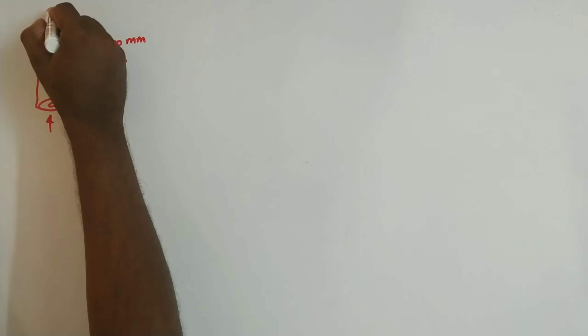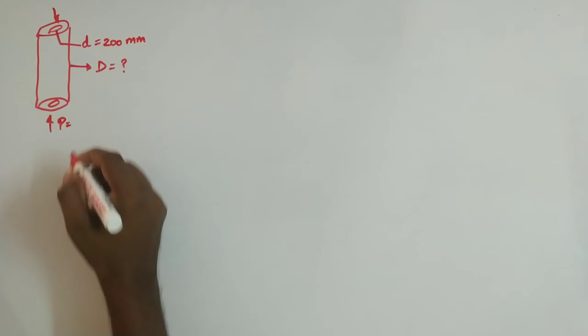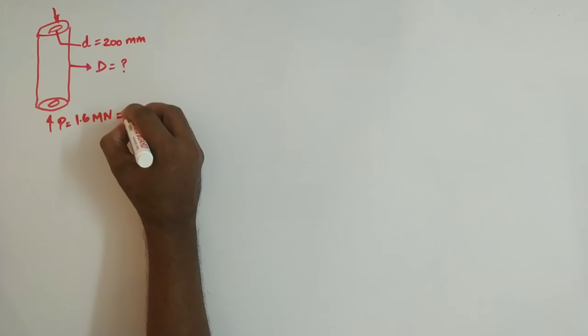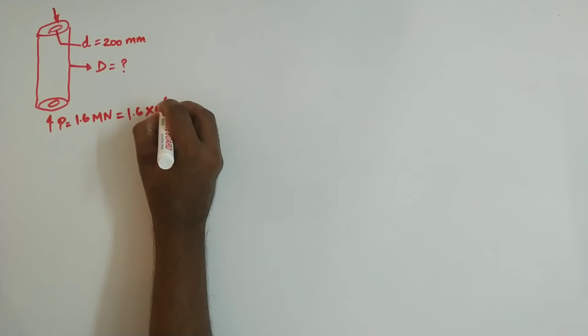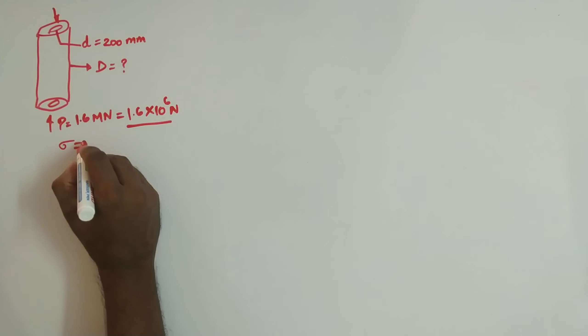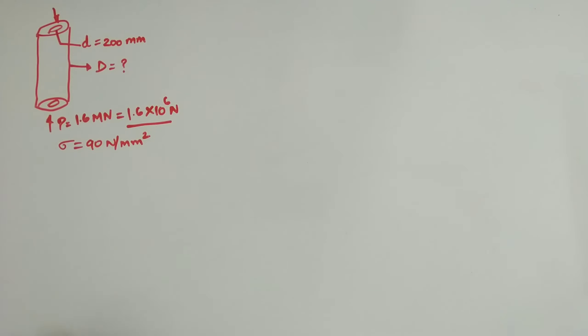A compressive load of 1.6 mega newton is applied — that is 1.6 into 10 to the power 6 newton. The load is applied with a safe stress of 90 newton per mm squared. We'll use the same approach as the previous problem and apply it directly to our formula.